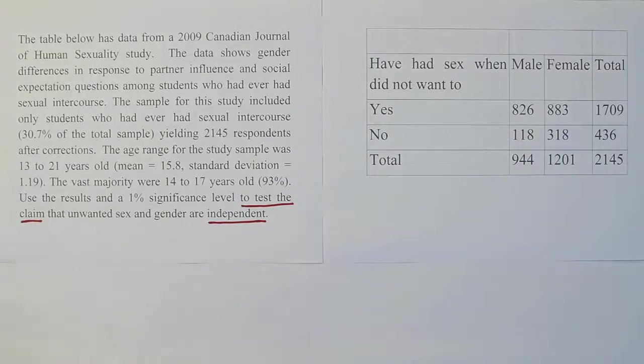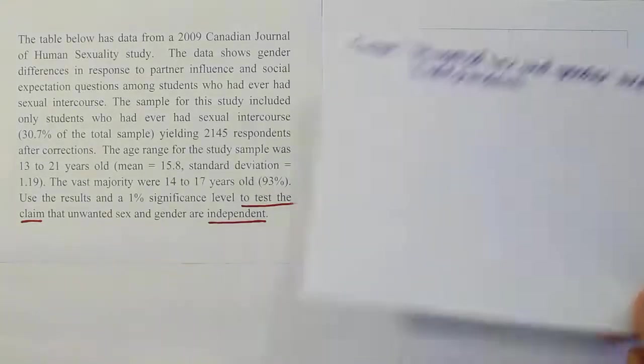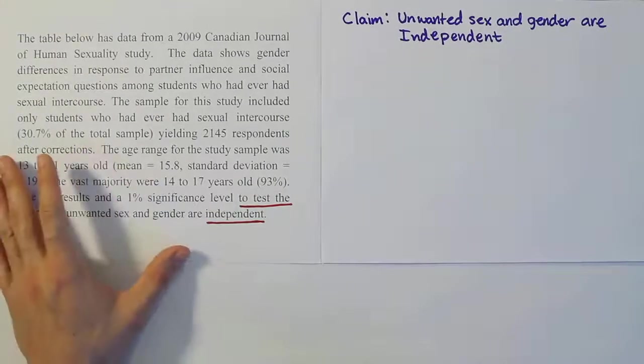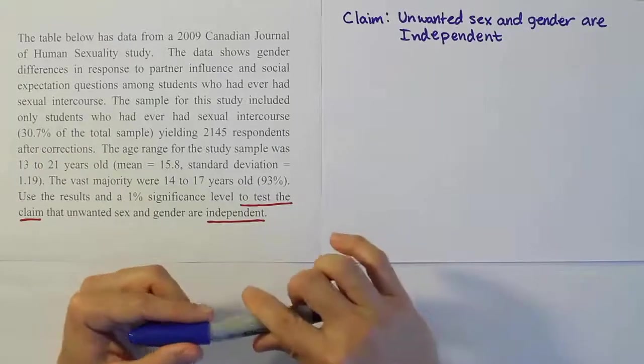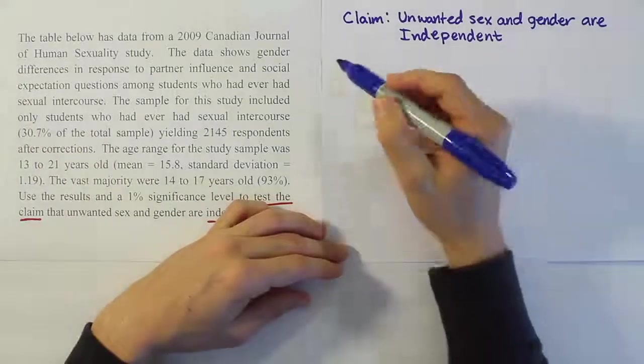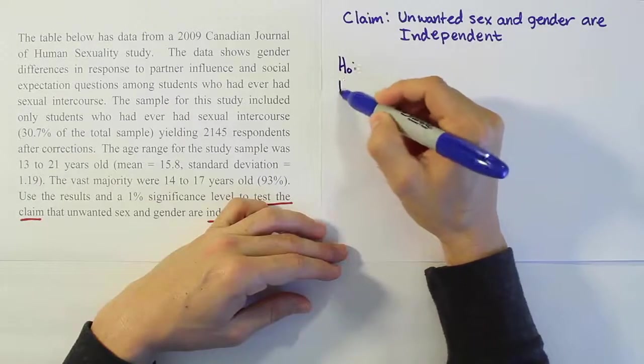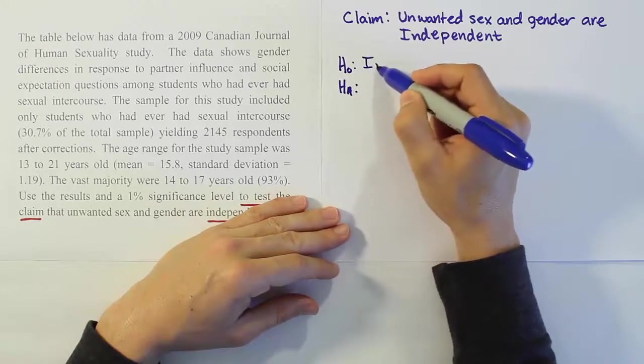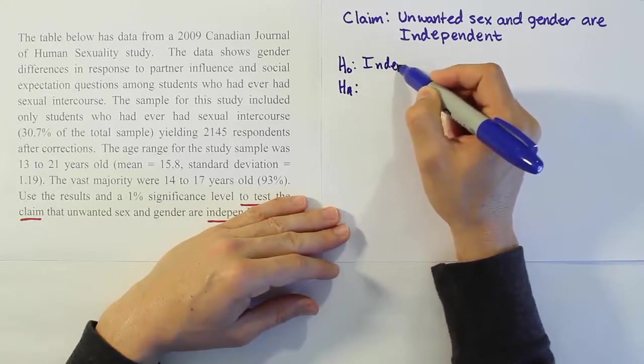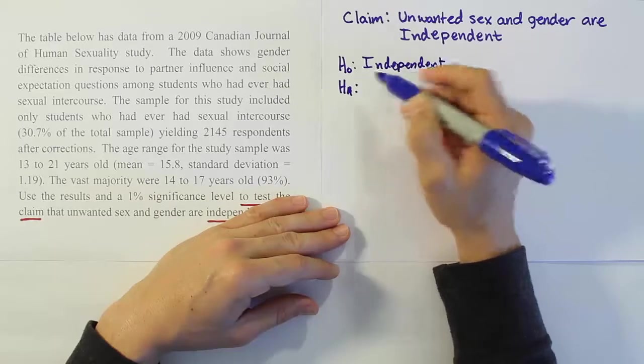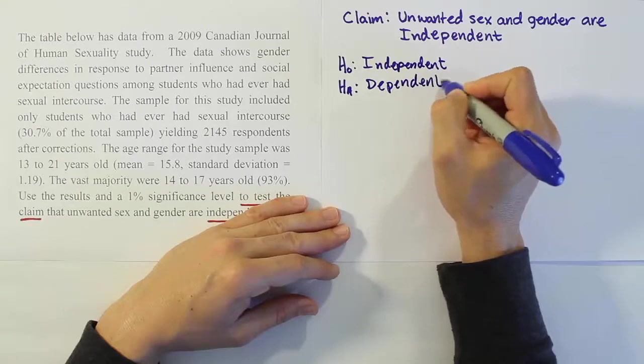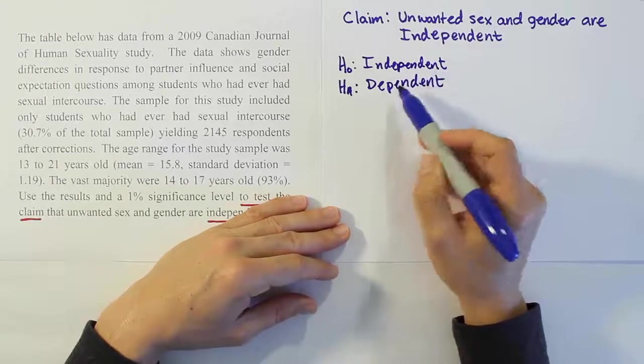The first step is to express the claim. The claim is that unwanted sex and gender are independent variables. Now H0 and HA are going to express the same pair of ideas each time for every test that we run using the chi-squared test of independence. H0 will always say independent and HA will always say dependent.